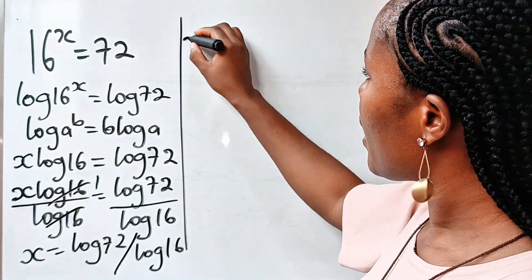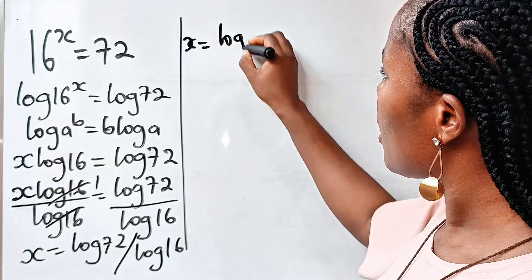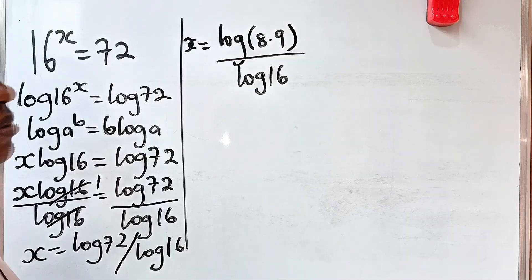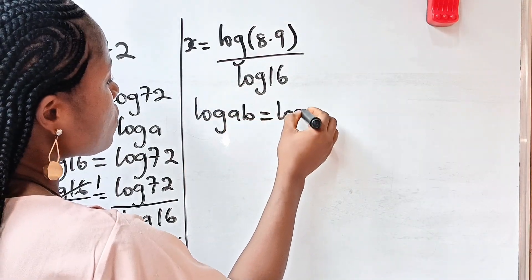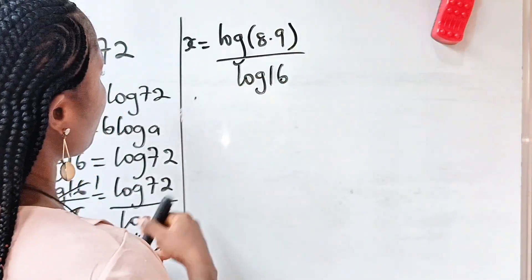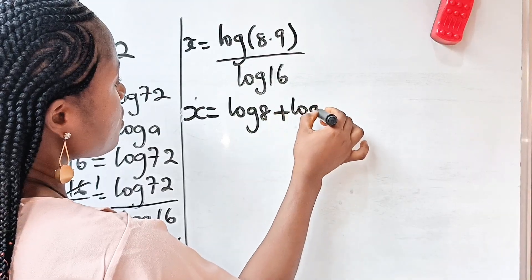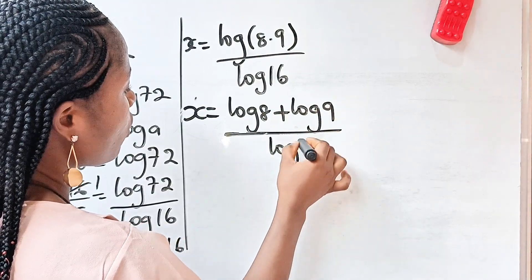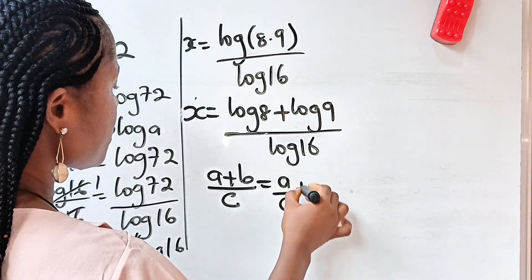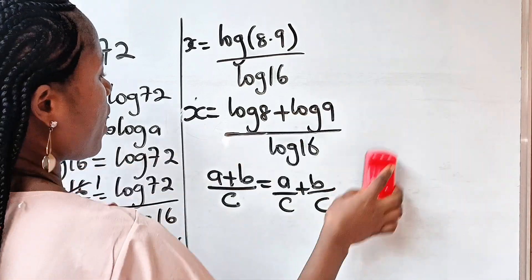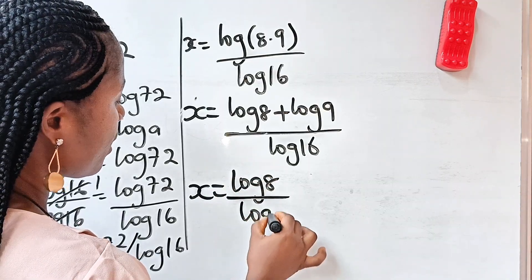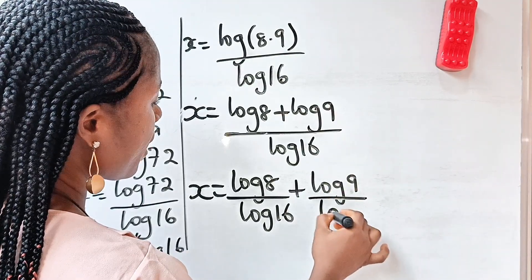So we have x is equal to log of 8 multiplied by 9, divided by log 16. Now recall the law of logarithms that states log a multiplied by b is equal to log a plus log b. So we can write this as x is equal to log 8 plus log 9, divided by log 16. Splitting the fraction, x is equal to log 8 divided by log 16, plus log 9 divided by log 16.